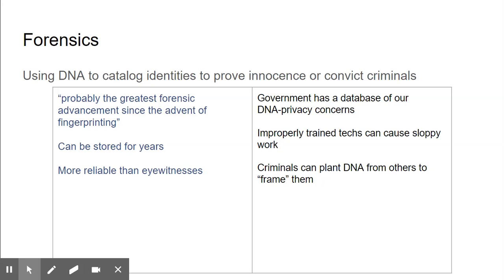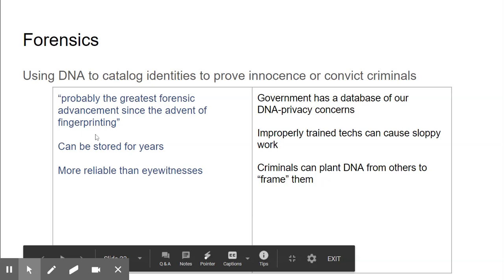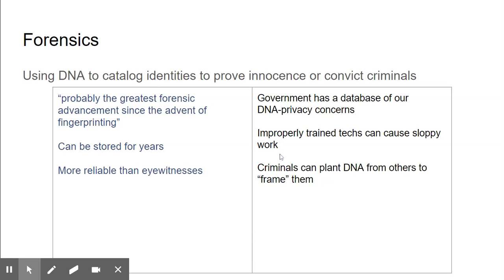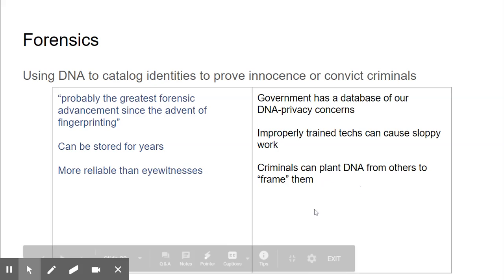Think about that for a minute. DNA evidence in crime scenes has been touted as the greatest forensic advancement since the advent of fingerprinting. It can be stored for years and used to solve cold cases. It is considered more reliable than eyewitnesses. Some drawbacks: are you comfortable with the government having a database of our DNA? That brings up some privacy concerns. Sometimes improperly trained technicians can cause sloppy work, and you want the DNA evidence being presented to be true and accurate. Also, what if a criminal actually planted DNA from others to frame them?